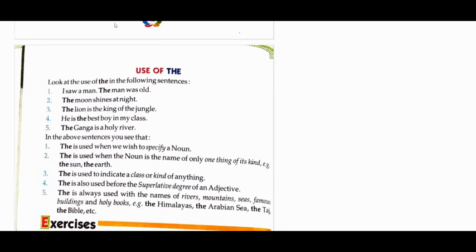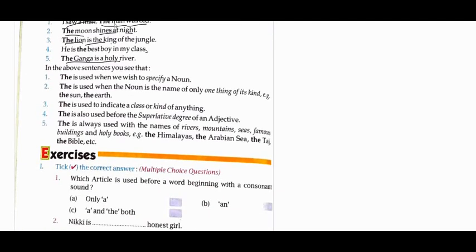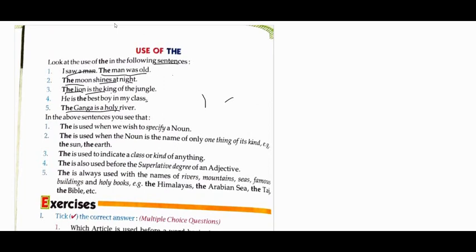Look at these following sentences: I saw a man, the man was old. The moon shines at night. The lion is the king of the jungle. He is the best boy in my class. The Ganga is a holy river. We have read them. Now how can you use 'the'?